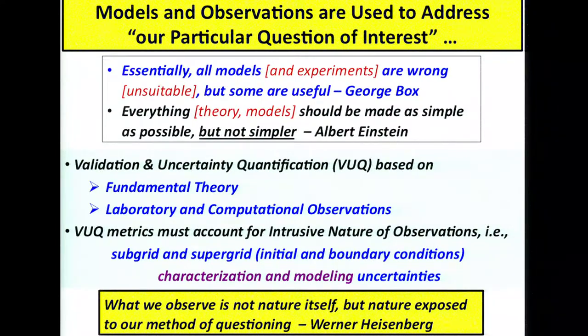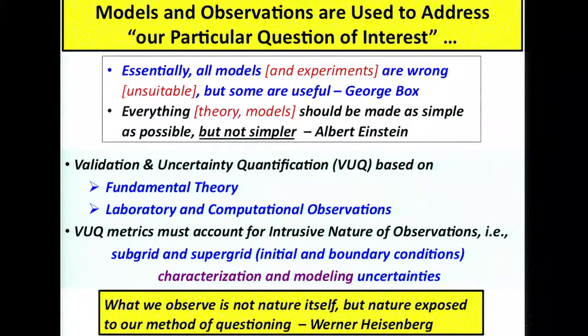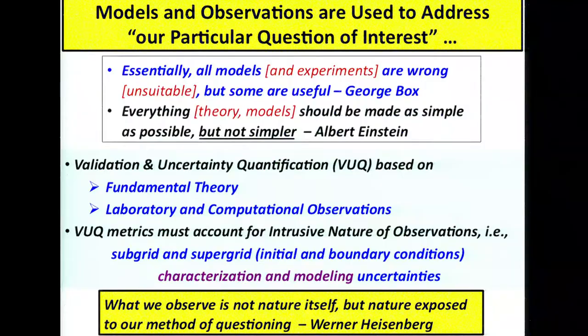From Einstein's world: you would like everything to be made as simple as possible, but it shouldn't be simpler. This is the issue of what is the minimum set of ingredients you need to build into your model to be successful in your prediction — whether that is an actual prediction or addressing a question of interest.